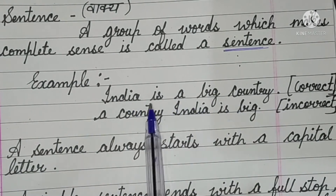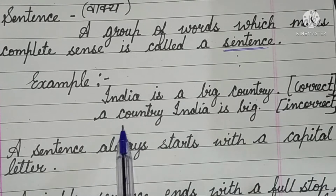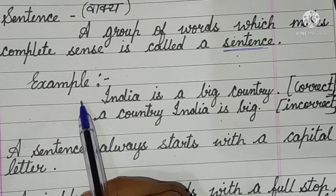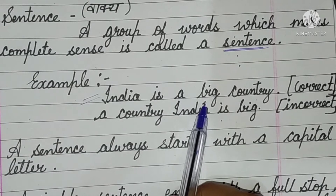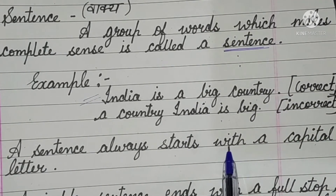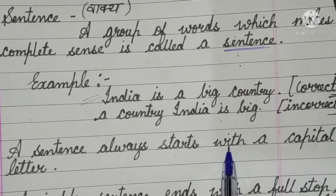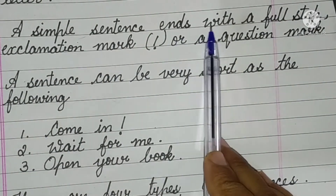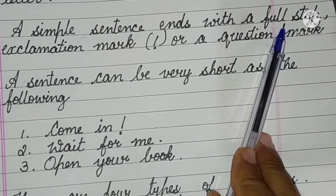For example: 'India is a big country' — Bharat desh bahut bada desh hai — this is correct. But 'India is big the same words' written in a non-meaningful way is incorrect. So whatever sentence we write should give a proper meaning. A sentence always starts with a capital letter — ek vakya hamesha capital letter se shuru hona chahiye.